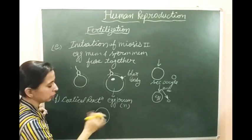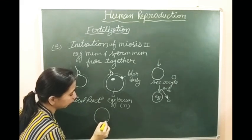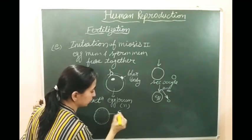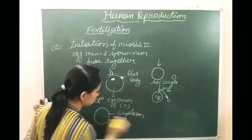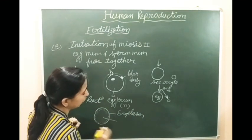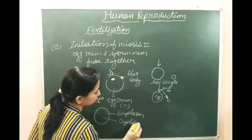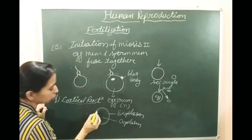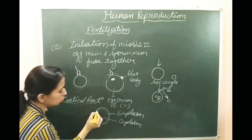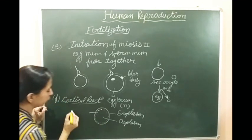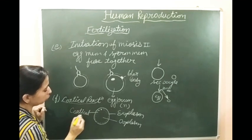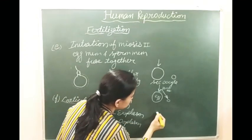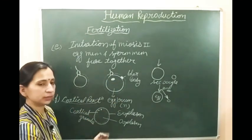This is the structure of the egg. Inside the membrane, the egg is divided into two parts. The outer part - the cortex part - is known as exoplasm, and the inner part of the egg is known as ooplasm. In the cortical reaction, the exoplasm part, which is the cortex of the egg, has some granule-like structures present inside it, and these granules are known as cortical granules.